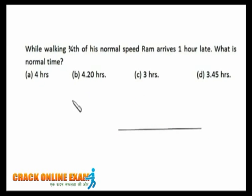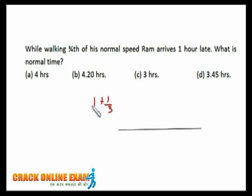Now assume the normal time is 1 unit. If he's walking at three-fourths of his normal speed, his time will be four-thirds of normal — that is the reciprocal, since speed is inversely proportional to time. So four-thirds equals one plus one-third, meaning he's taking one-third part extra from normal.